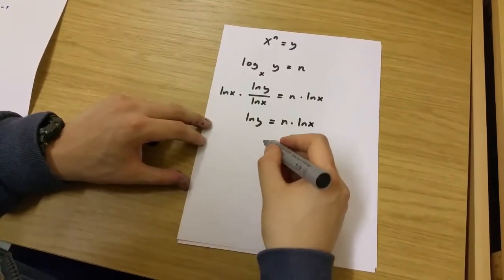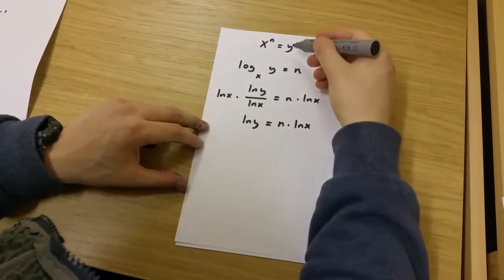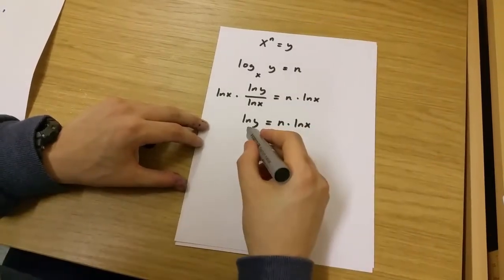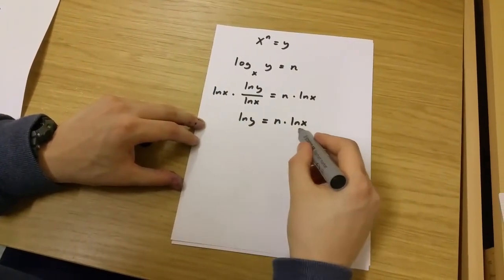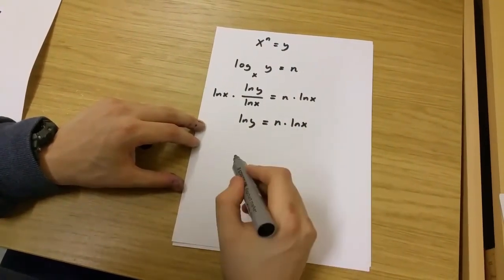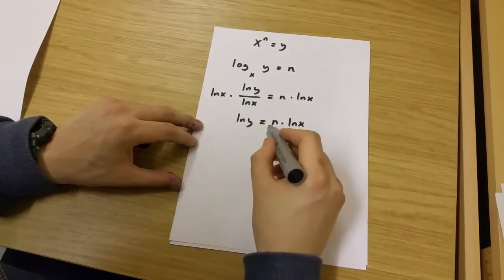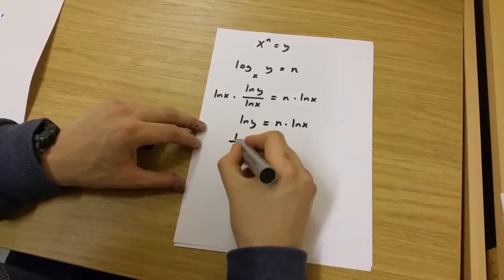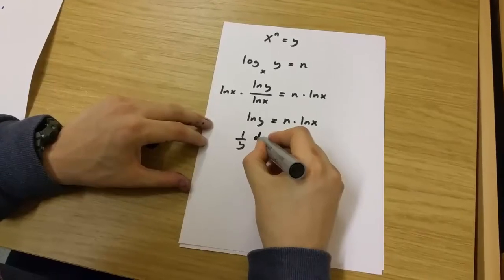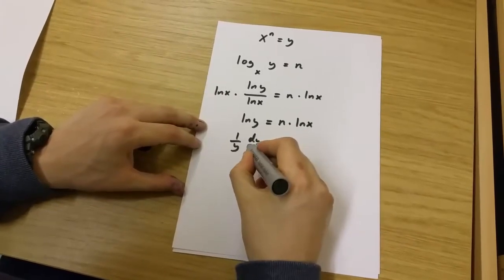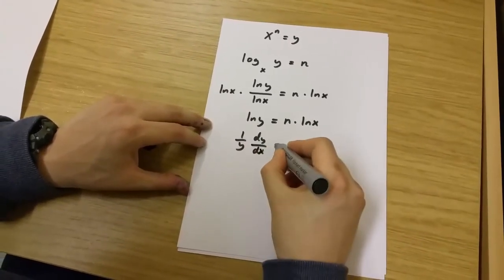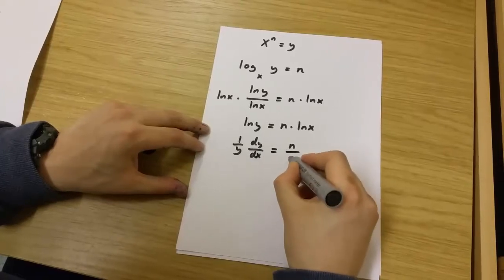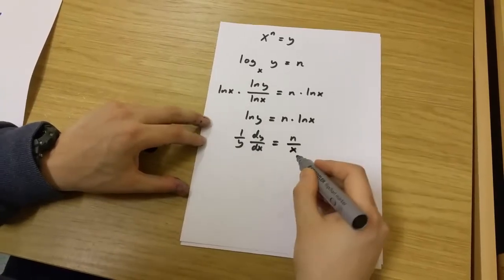Now, to get the derivative of y equals x to the power of n, I'm going to use implicit differentiation. If I use implicit differentiation, I'm going to get 1 over y multiplied by dy over dx equals n over x.